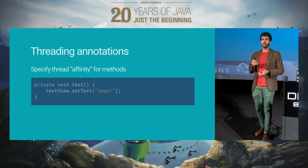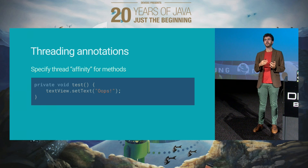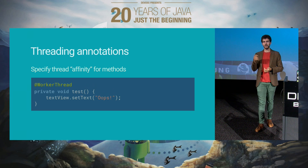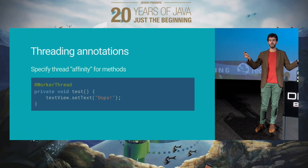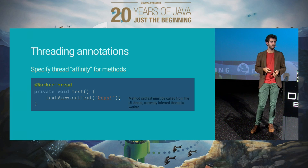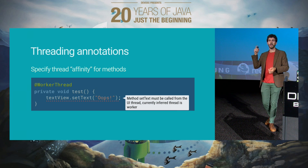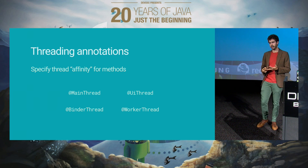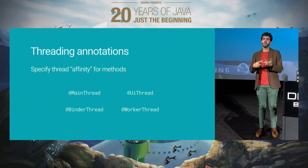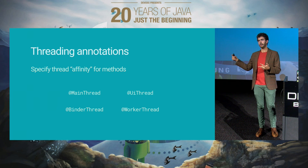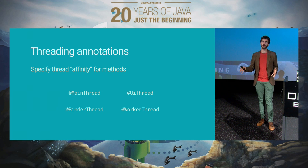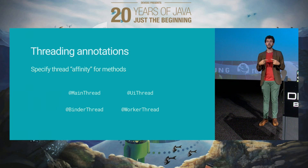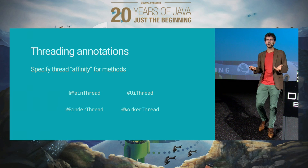Threading can be a problem. If you want to specify that a method has to be called on a specific thread, you can use the threading annotations. For example, if you say this method is going to be called on a worker thread — called from a service or a background thread — then the IDE will tell you that you shouldn't touch views in there, and the other way around of course. There are four of them: @UiThread, @MainThread, @BinderThread, and @WorkerThread. @UiThread and @WorkerThread are intuitive. @MainThread is the main UI thread, but you can have a different UI thread for each window. @BinderThread is the thread that does the inter-process binding.